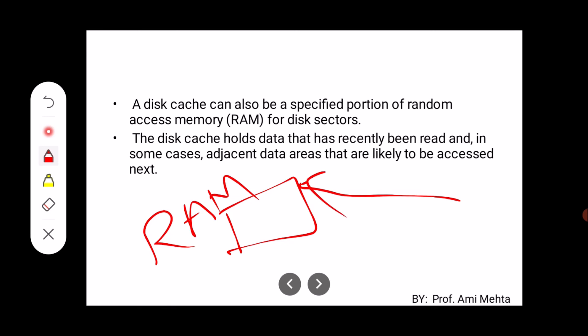Some disk sector data is read and stored in RAM. The disk cache holds data that has recently been read and in some cases, adjacent data areas that are likely to be accessed next.